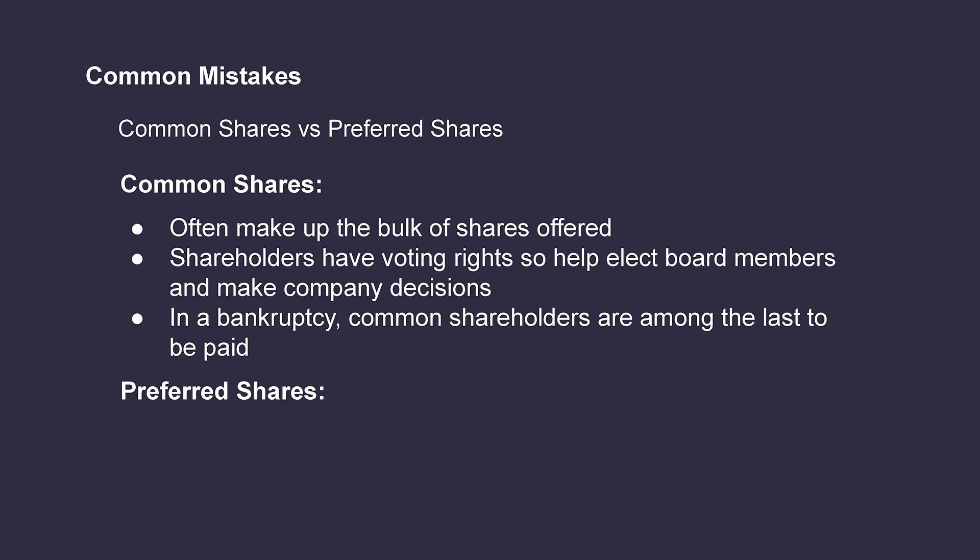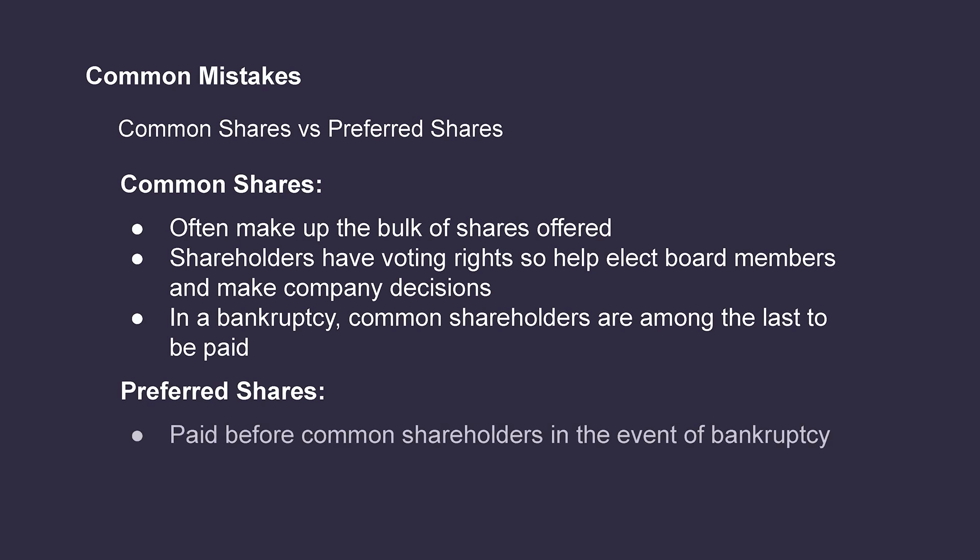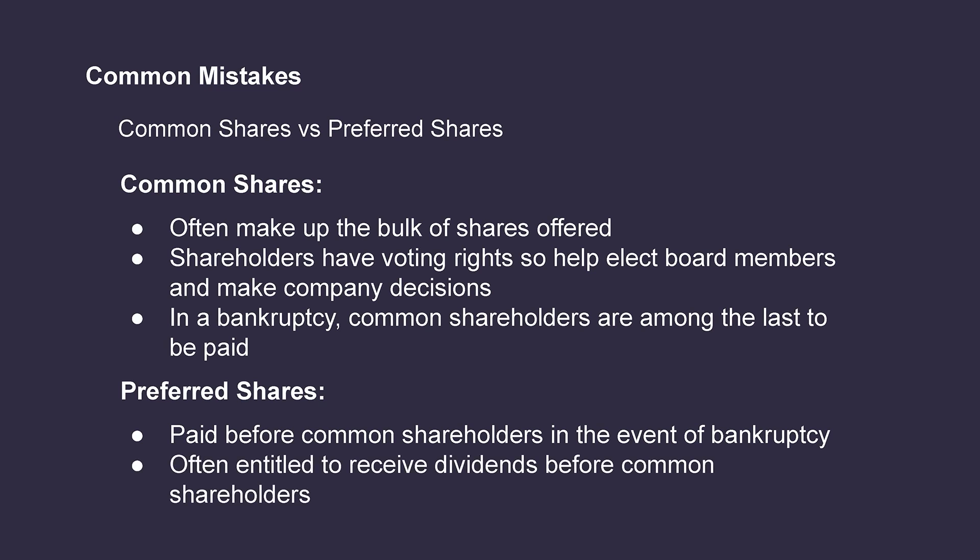Corporations also have the option of issuing preferred shares, which have special rights attached to them. Preferred shareholders receive a priority claim on the assets of an organization, which takes preference over that of common shareholders in the event of a bankruptcy situation. They are also often entitled to receive cash dividends at a predetermined rate, which are paid out to them before being paid to the common shareholders.